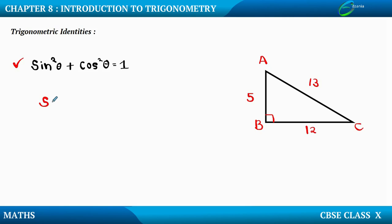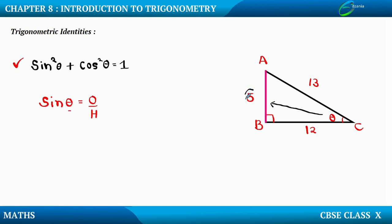We know that sin theta is opposite upon hypotenuse. So first I need to identify angle theta. I am considering this acute angle C as theta. For this theta, the opposite side is the side exactly in front of theta. So side AB is the opposite side, which means 5 is my opposite side.